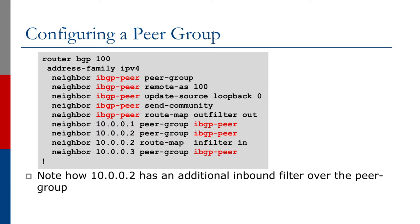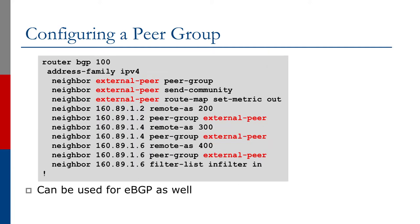Note that neighbor 10.0.0.2 also has a separate inbound policy applied to it. We can use a peer group for external BGP as well. This is most commonly seen at internet exchange points, where a member of an internet exchange point will have the same outbound policy to many peers at that exchange. This is very useful for ease of management of the large number of peers you typically see at an internet exchange point.